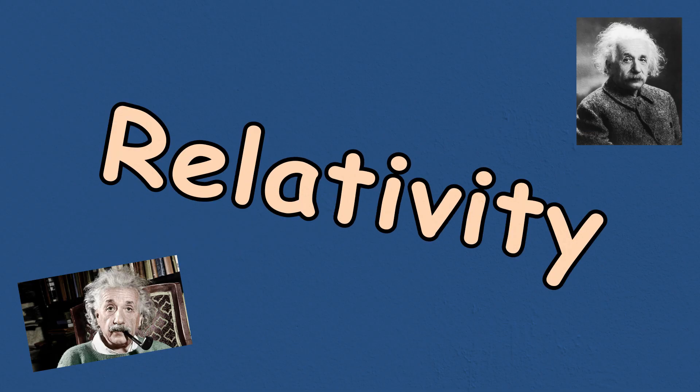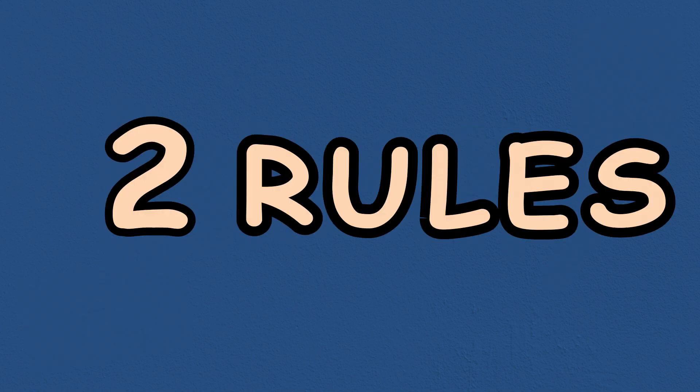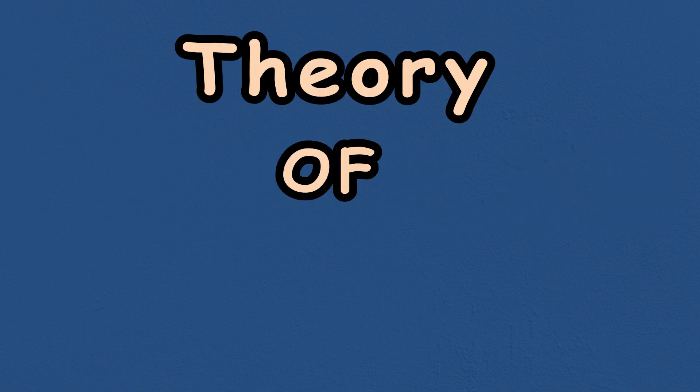Relativity is quite an easy subject to understand because it just boils down to two rules. And if you can understand these two rules, then you can understand the theory of special relativity.